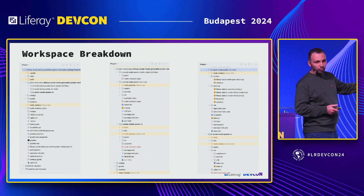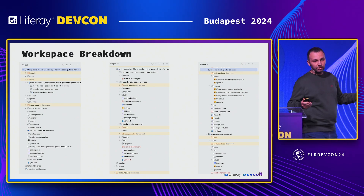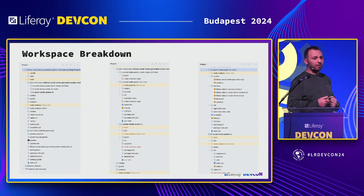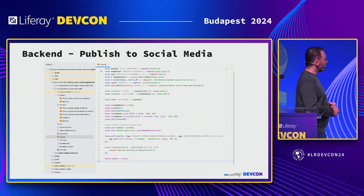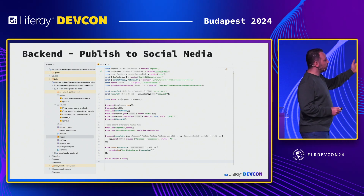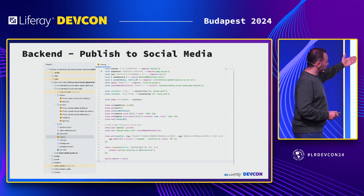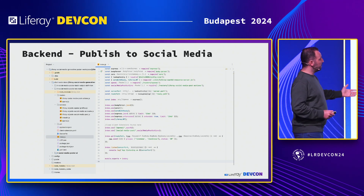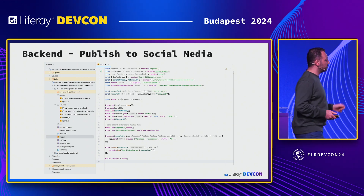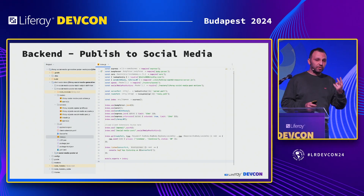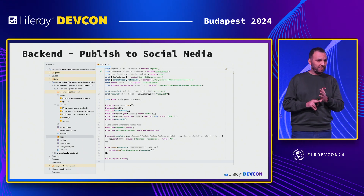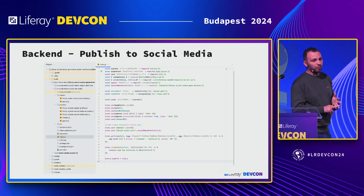This is the code — and there's nothing Liferay-specific. No dependency injection, nothing to learn about Liferay internals. All you need to know is how to call APIs. This is a normal Node.js entry point for a microservice. The two main logic pieces in the application are: communicating with ChatGPT and posting to LinkedIn.